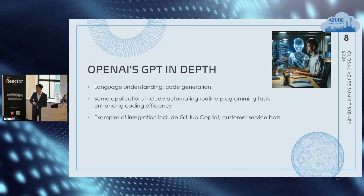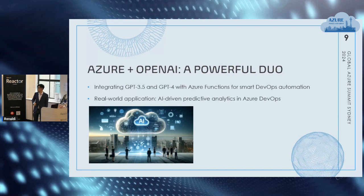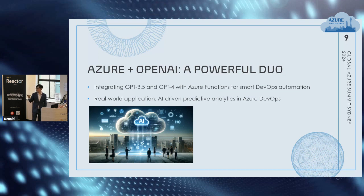Aside from that, you can also integrate into things such as customer service bots. With Azure and OpenAI together, you can create a powerful duo — integrating GPT-3.5 and 4 into different workflows. One workflow that is very usable is Azure Functions for smart DevOps automation, being able to further build on the current automation process and CI/CD process. We also want to bring in the real-world application — AI-driven predictive analytics within Azure DevOps.